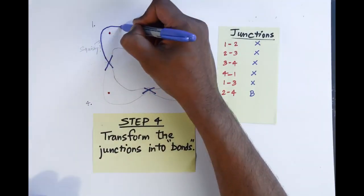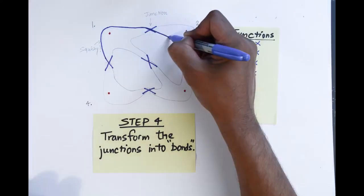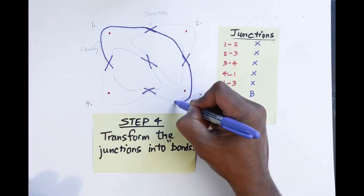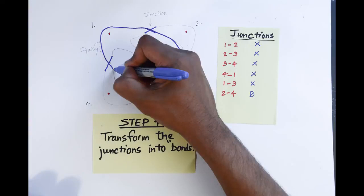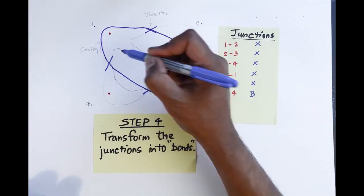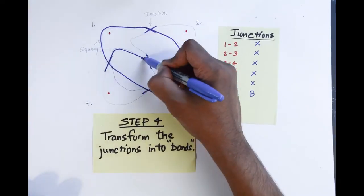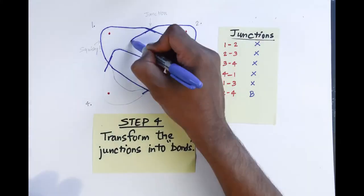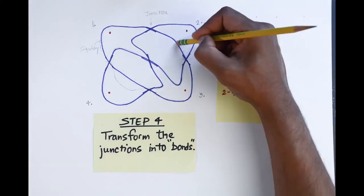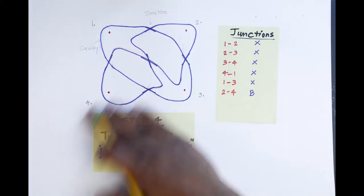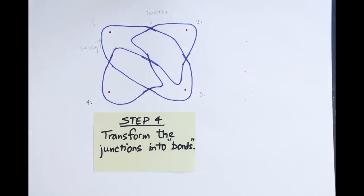Now, start from any point on a squishy and follow along until you reach the starting point. If all the points are not circled, then start again from an unmarked squishy and follow along till you reach the starting point. Repeat till all the dots are circled.